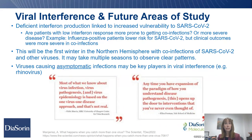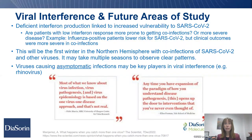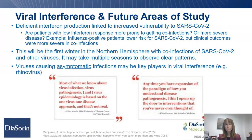What are some future areas of study? Looking at deficiencies in interferon production in individuals — whether those with low interferon responses are more prone to co-infections or more severe clinical outcomes. This will be the first winter in the Northern Hemisphere where we'll start to see some co-infections, since a lot of viruses are coming back. It might take several seasons to observe clear patterns. Viruses causing asymptomatic infections could be key players in viral interference, and rhinovirus causes a lot of these asymptomatic infections.